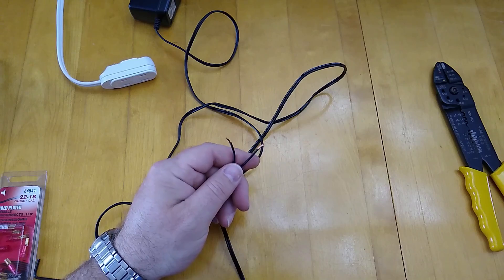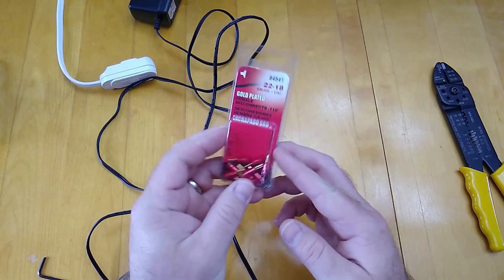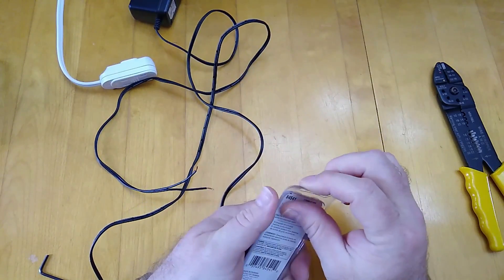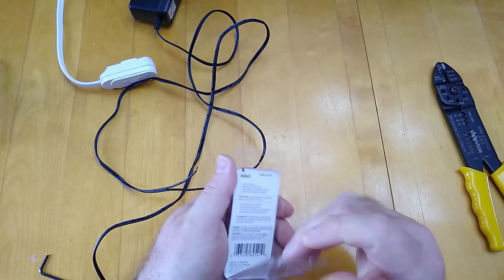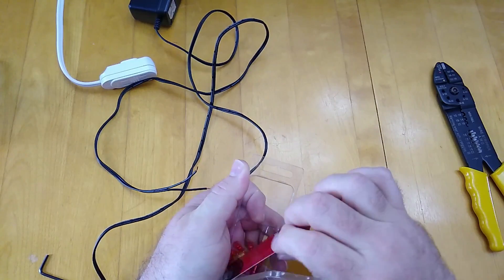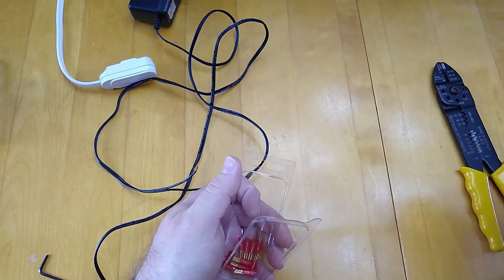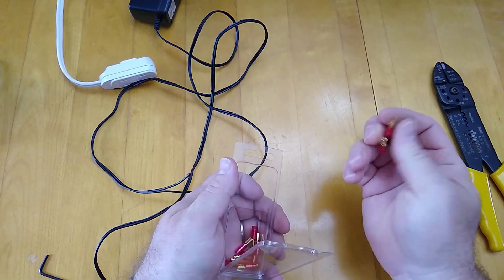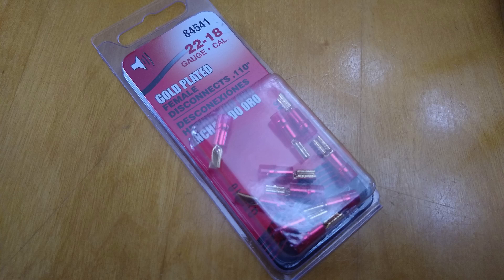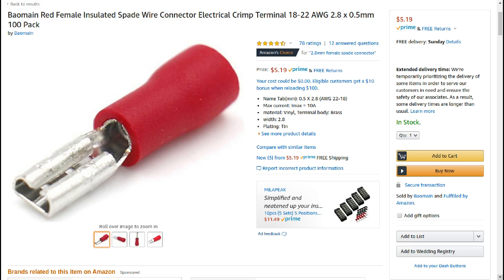I'm using some small gold plated terminals - female disconnects made to fit wire gauge sizes from 22 to 18 gauge wire. The disconnects, the distance across the spade, is 0.110 inch. They're really small terminals. You can also find these on Amazon listed as 2.8 millimeter female quick disconnects.